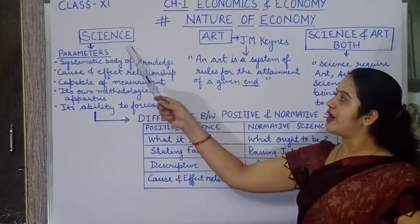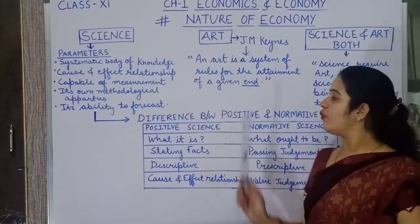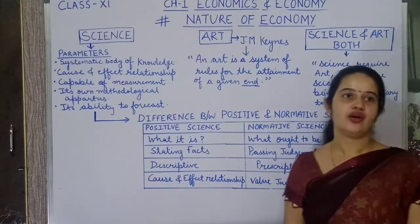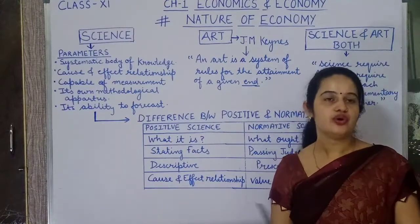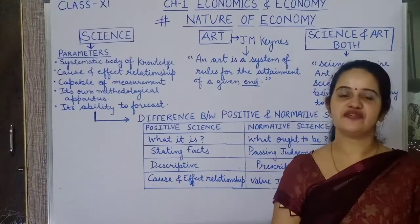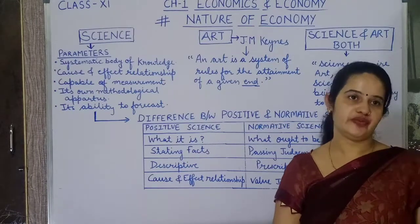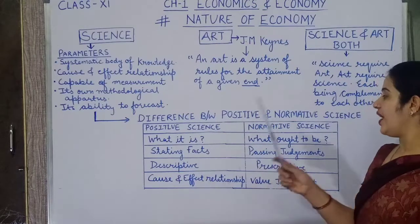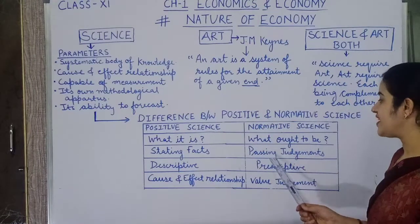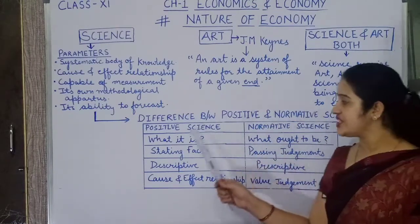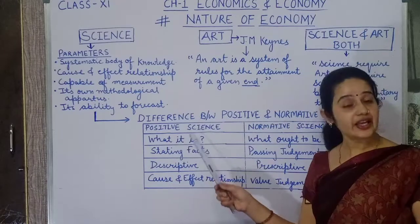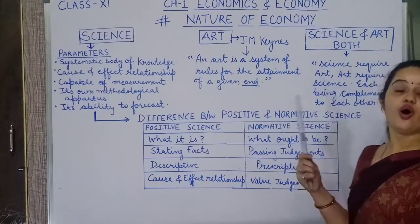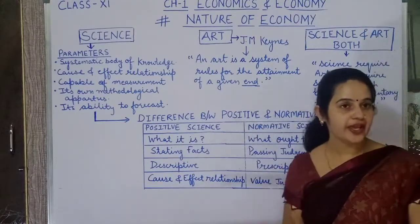Science has two subdivisions within itself: positive science and normative science. Positive science always states a fact, whereas normative science passes judgment. Positive science states what 'it is', and normative science states what 'ought to be' or 'what should be'.